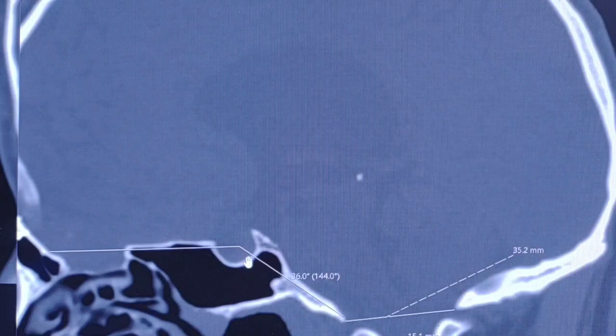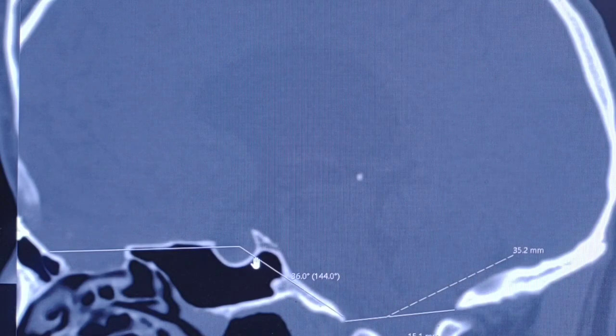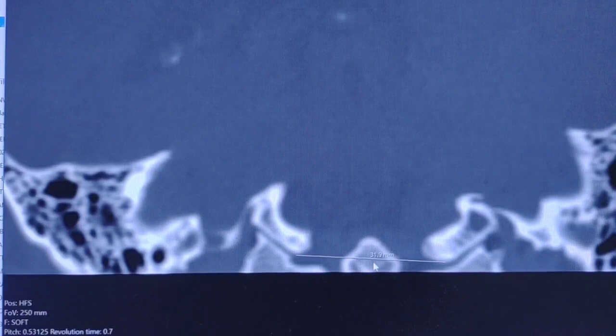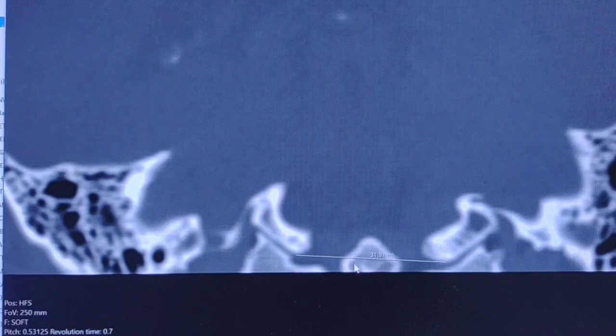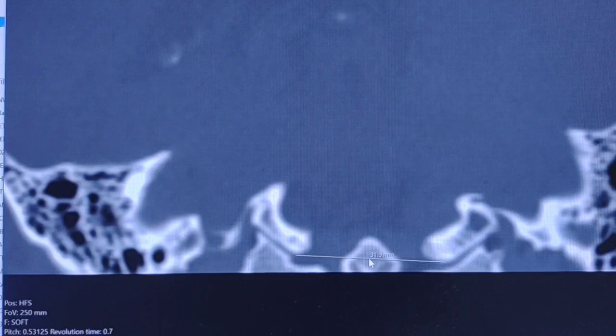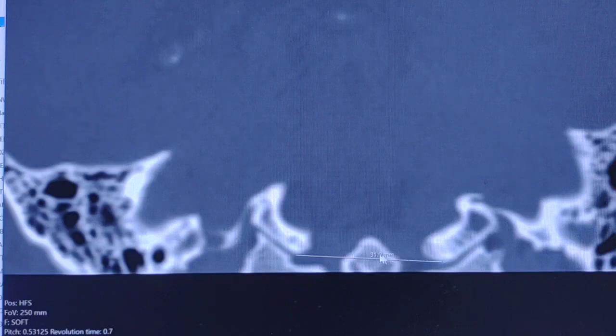But in this case, the patient also has basilar invagination, also called basilar impression. This is a congenital or acquired craniocervical junction abnormality where the tip of the odontoid process of the C2 vertebra projects above the foramen magnum, like in this case.